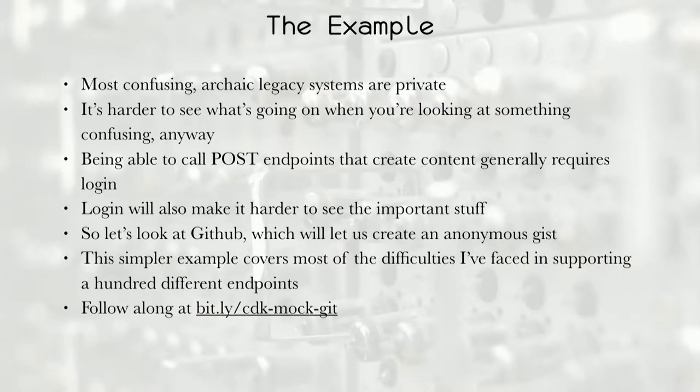We're going to go through an example. But unfortunately, I can't walk through any of the systems that I've actually worked on with their amazing 500 internal server errors. But that's okay, because that's going to make it harder to understand anyway. I don't want to use a super complex example just to show how we chain two calls together. I do want to be able to show making a post call, making a call that changes something on the server. And so that would normally require that I have login. But then I'm going to have to also have the complexity of wrapping login around everything. So we're going to look at GitHub because GitHub is so friendly. They let us create an anonymous gist.